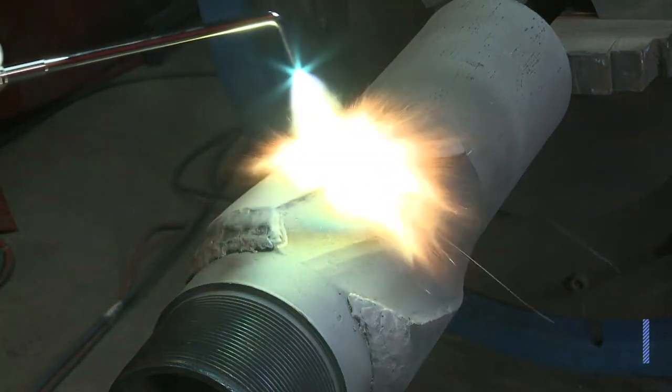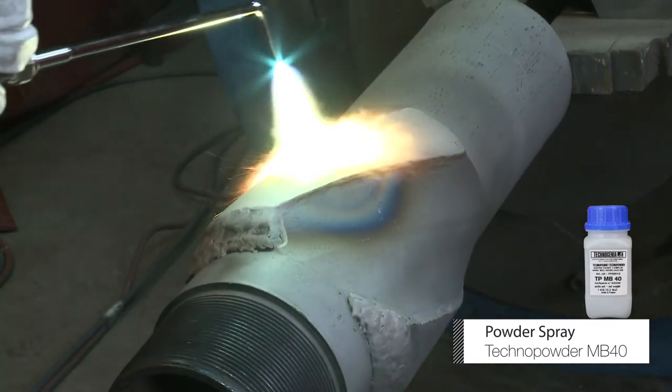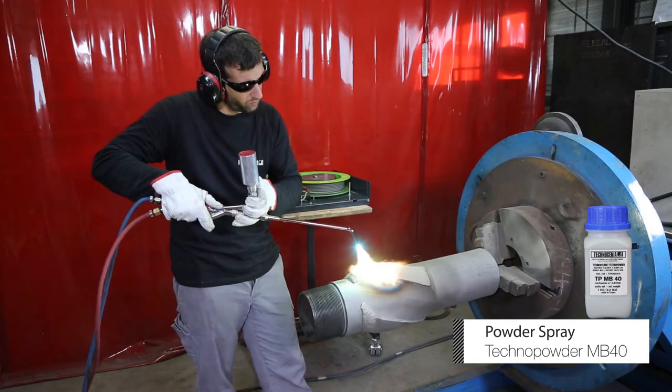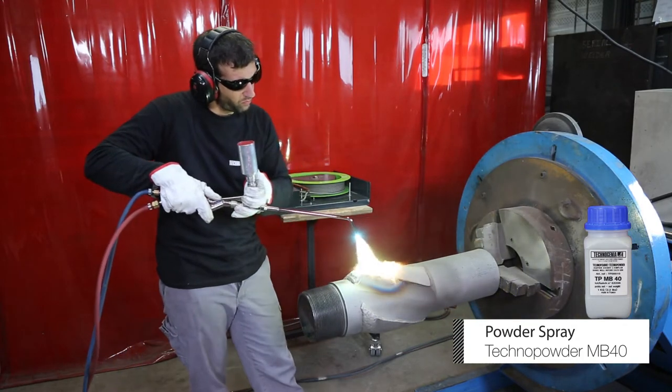Spray each blade using the spray torch with Techno Powder MB40. You will need to rotate the part to achieve the entire operation.